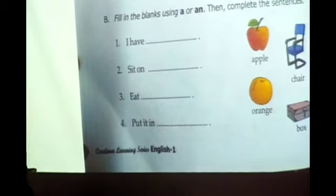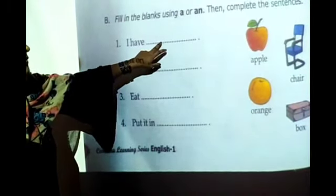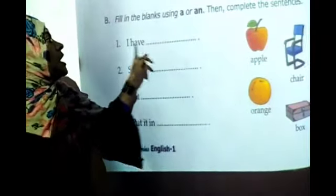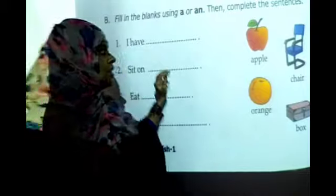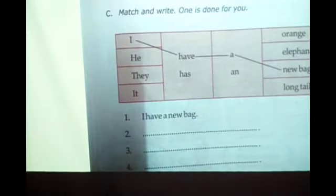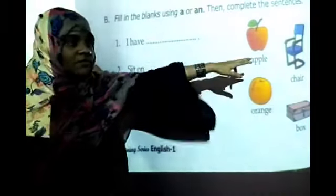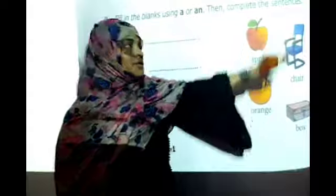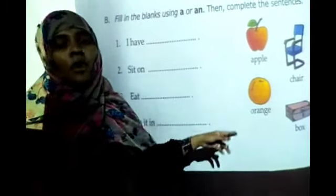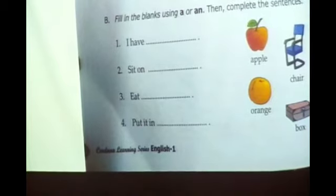Next, fill in the blank using A or An, then complete the sentence. For example: I have an apple. I have a chair. Sit on a chair. Eat an orange. Put it in a box. You only have to use the correct article and complete the sentences. This bit is also your homework, children.